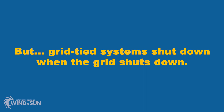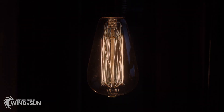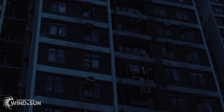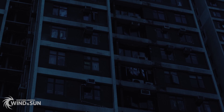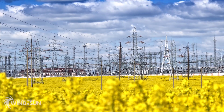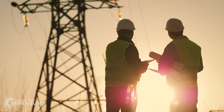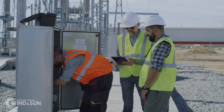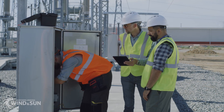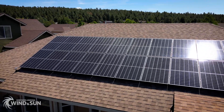One of the downfalls to a grid-tie system is if the grid goes down — the power goes out, a tree falls on a power line, there's an ice storm, a winter storm, a hurricane, or some other failure to the grid — the system has to shut down because the line workers who are trying to resolve that issue, these human beings, could be shocked because of your solar electric system.